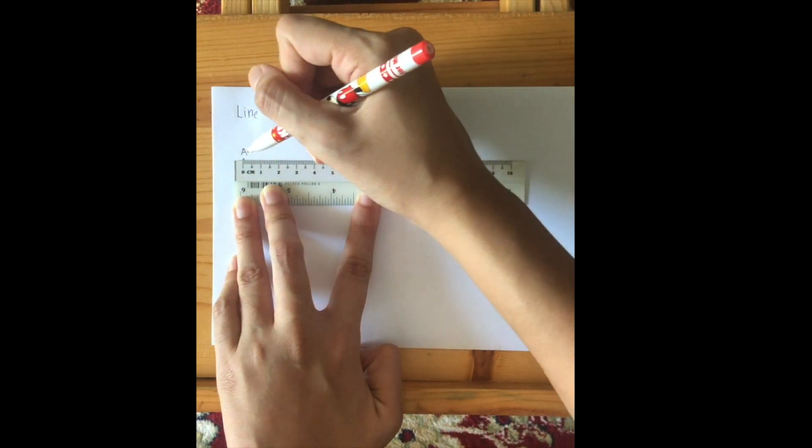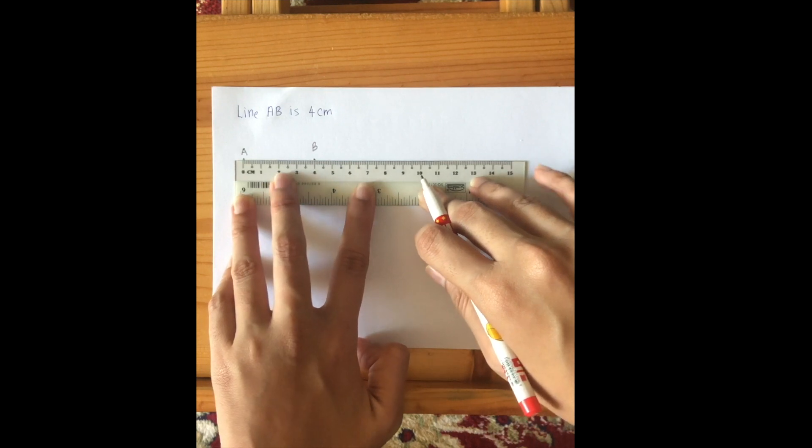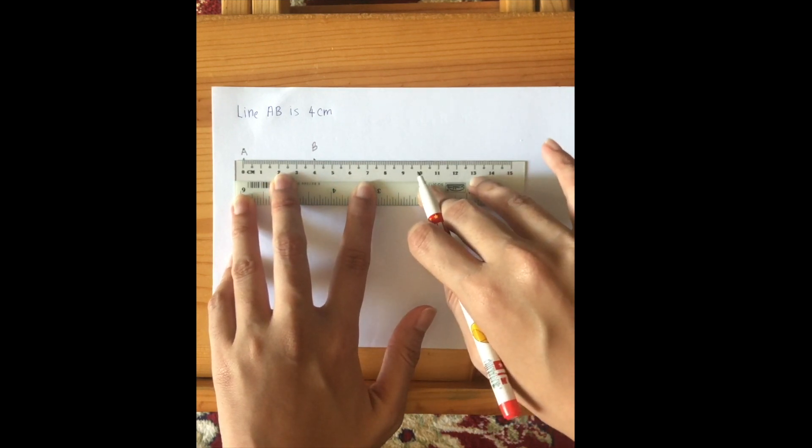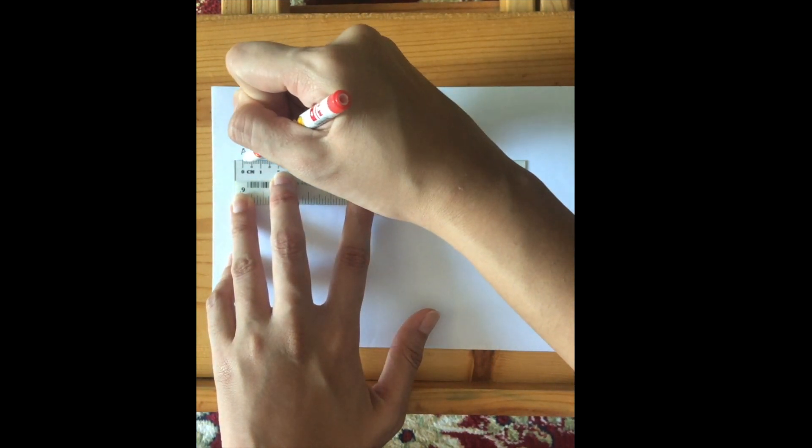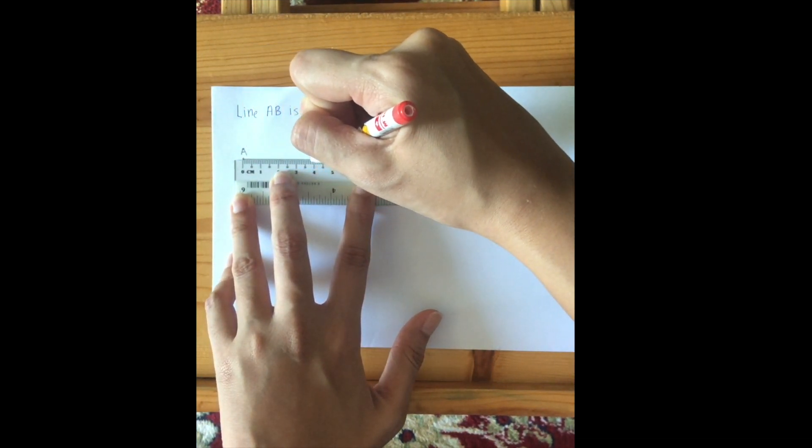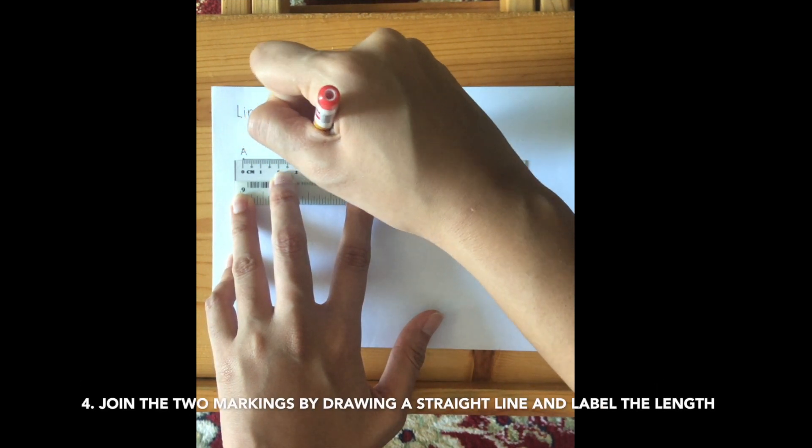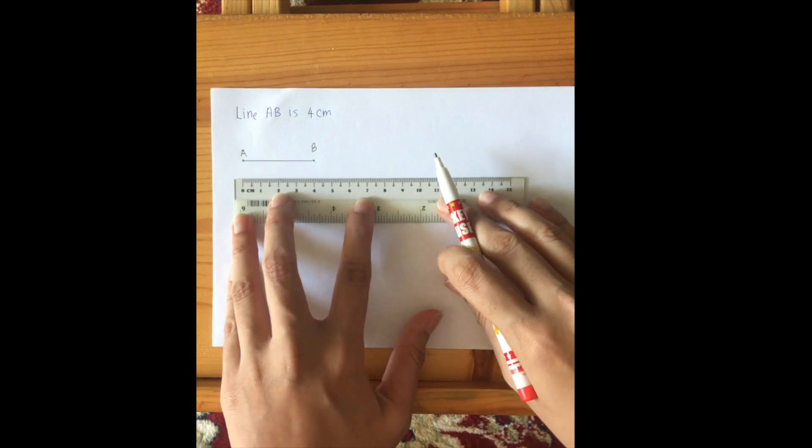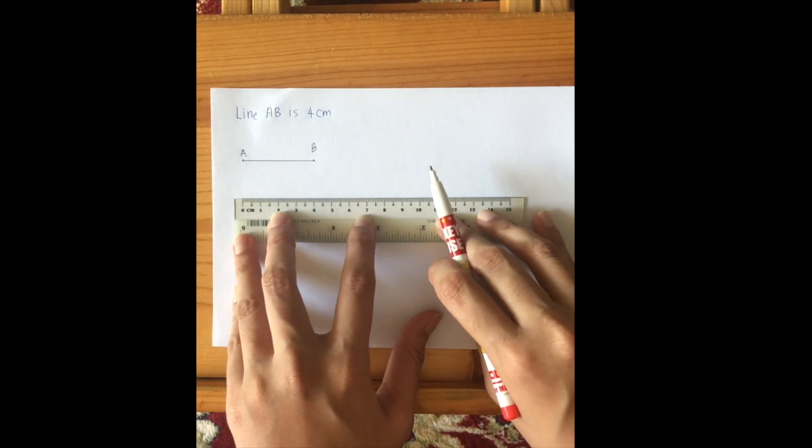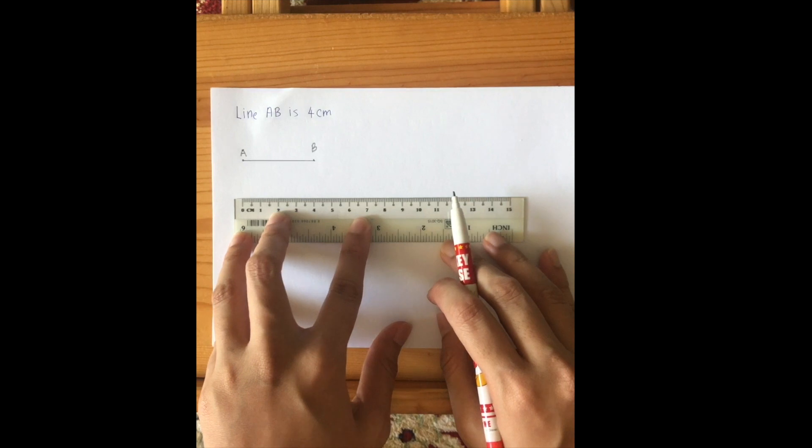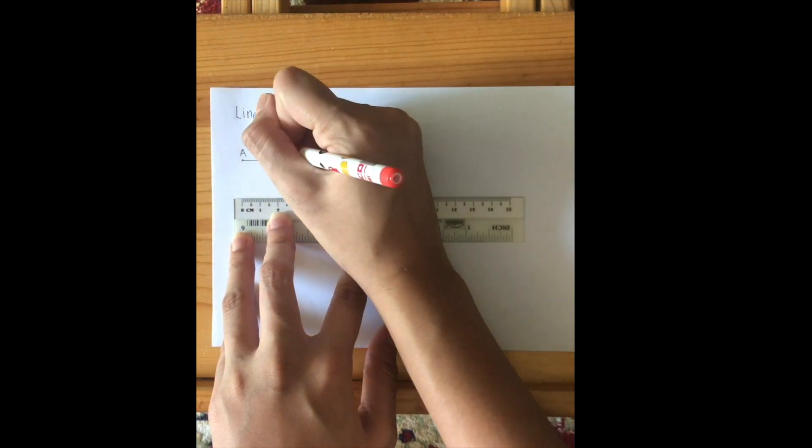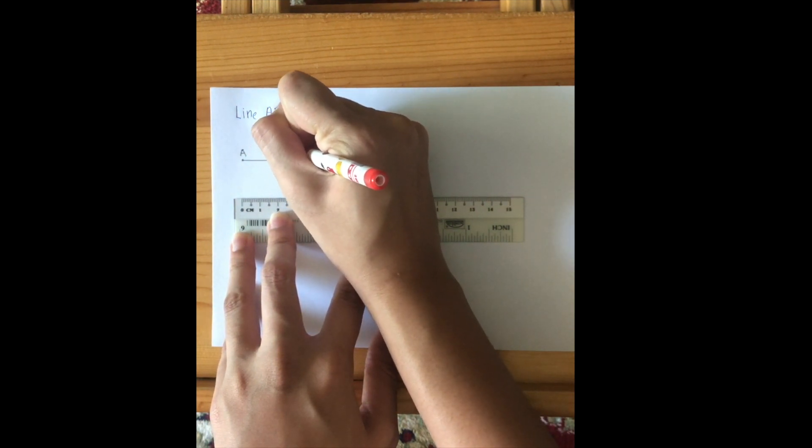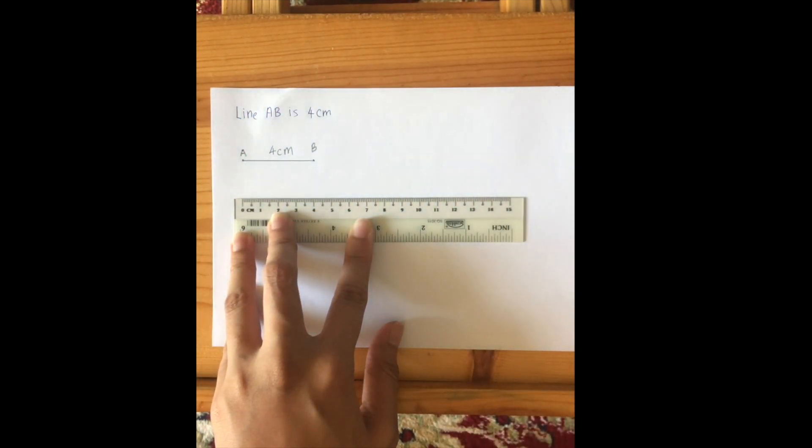Next I place the ruler firmly on the piece of paper without moving, because if you move your line will not be straight. And I join the two dots that I draw together, so I join it together and I lift it off. And there I have it, line AB. Now because I know line AB is four centimeters, therefore I label it as four centimeters. And there I go, I have my first line.